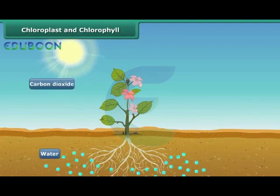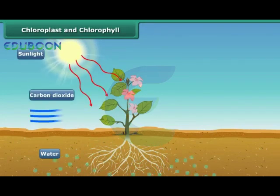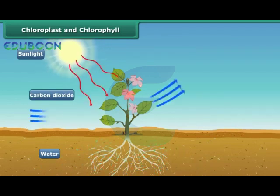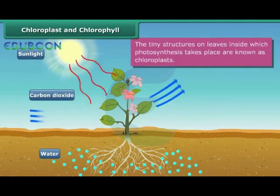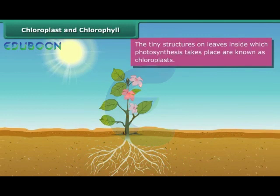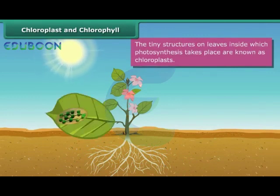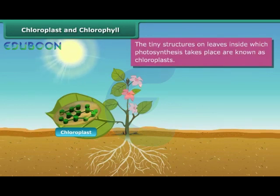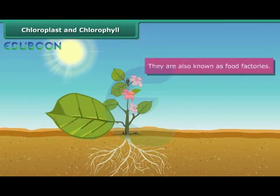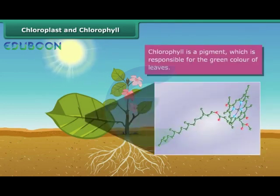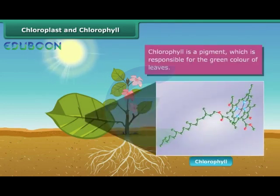Leaves make their food with the help of photosynthesis. The tiny structures on the leaves inside which photosynthesis takes place are known as chloroplasts. Due to their role in food production, they are also known as food factories. Chloroplasts are green in color. They get their color from a pigment called chlorophyll. Chlorophyll helps leaves prepare food.